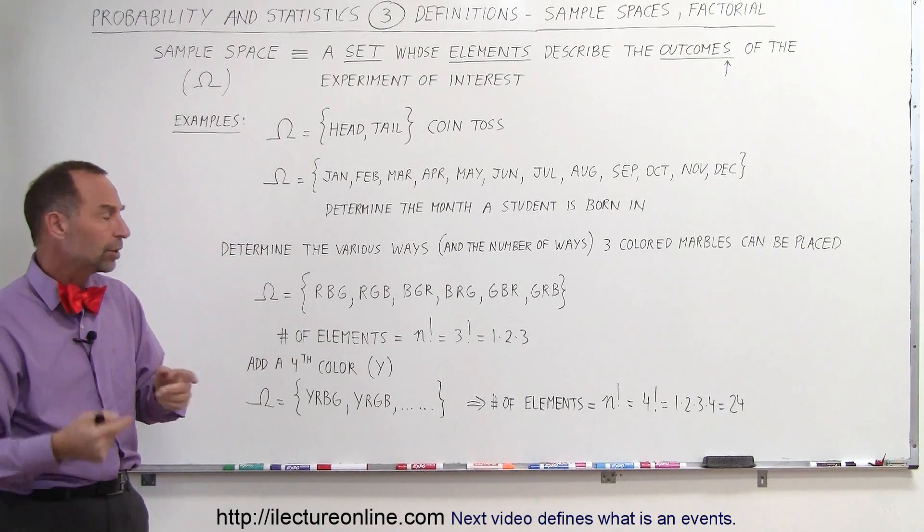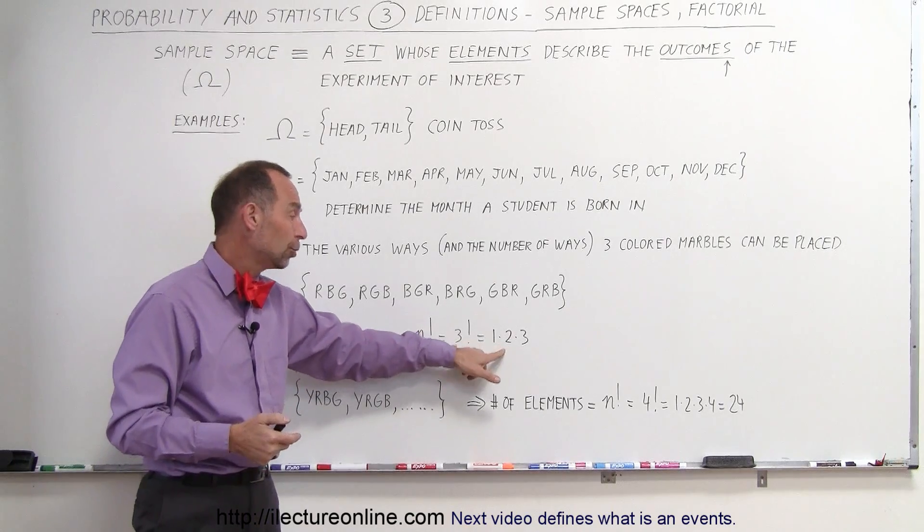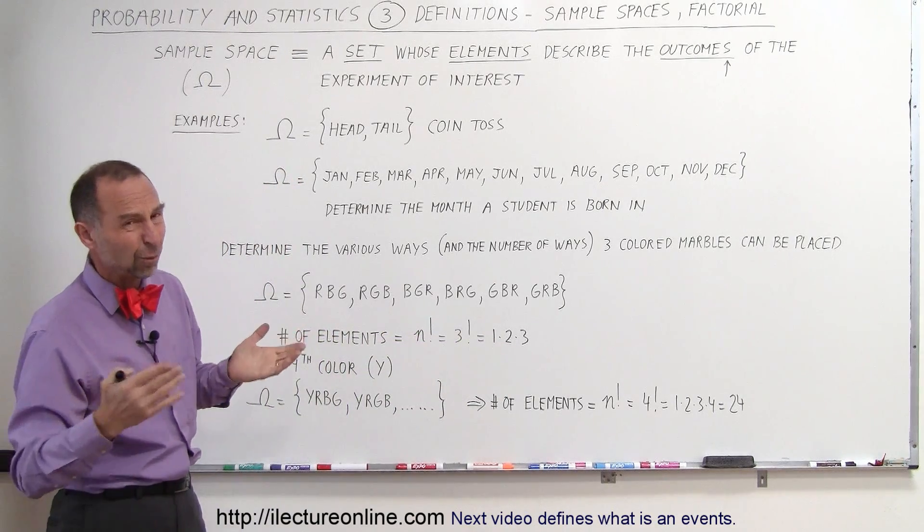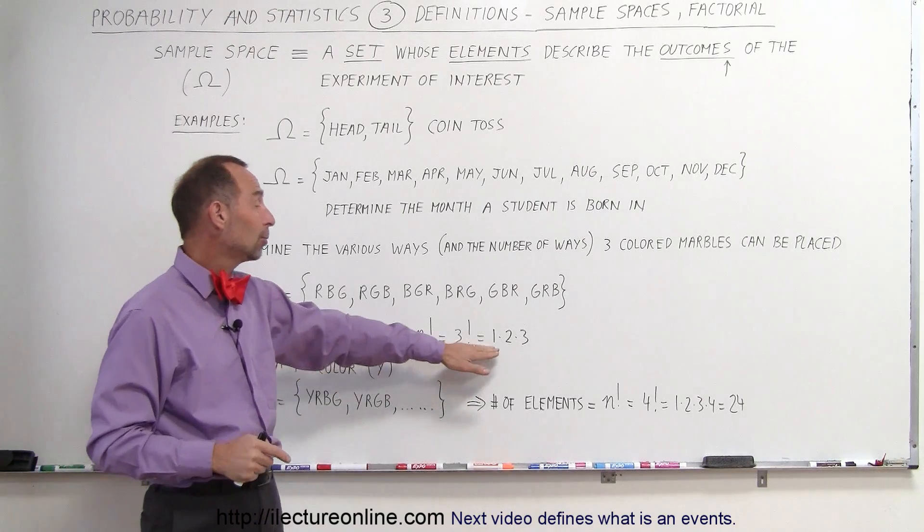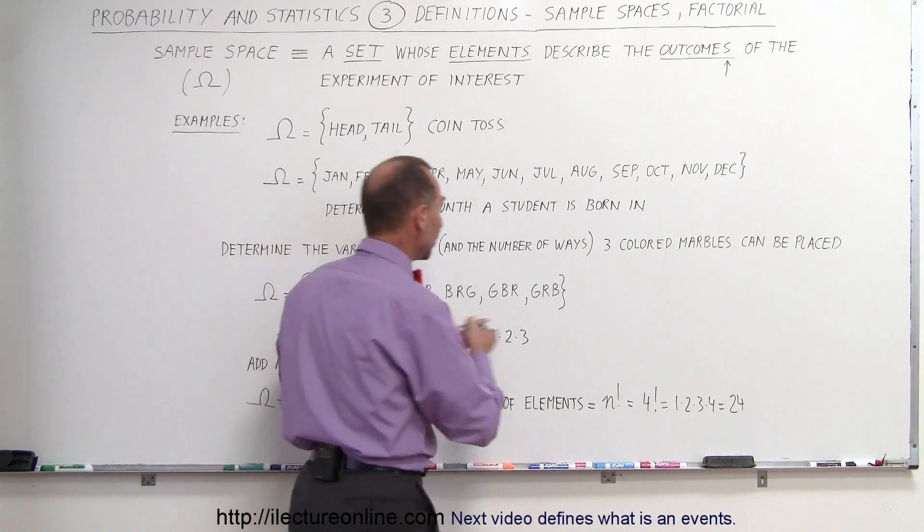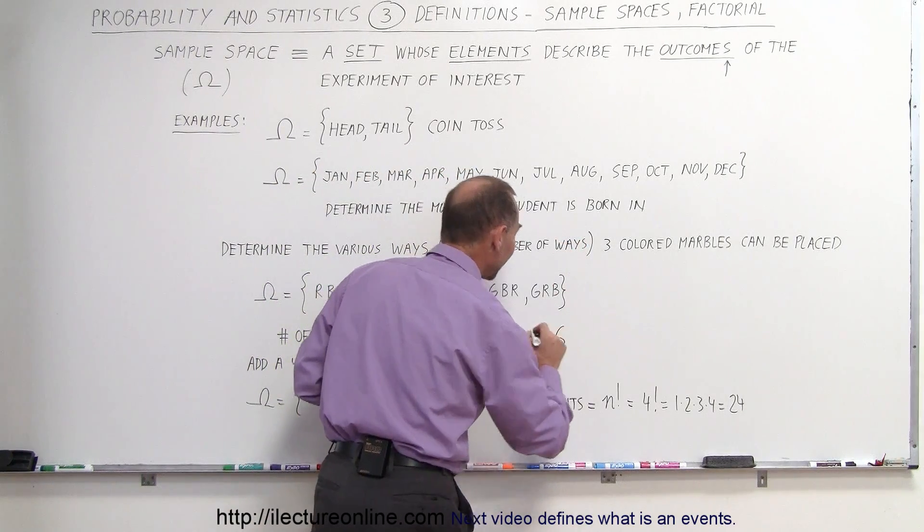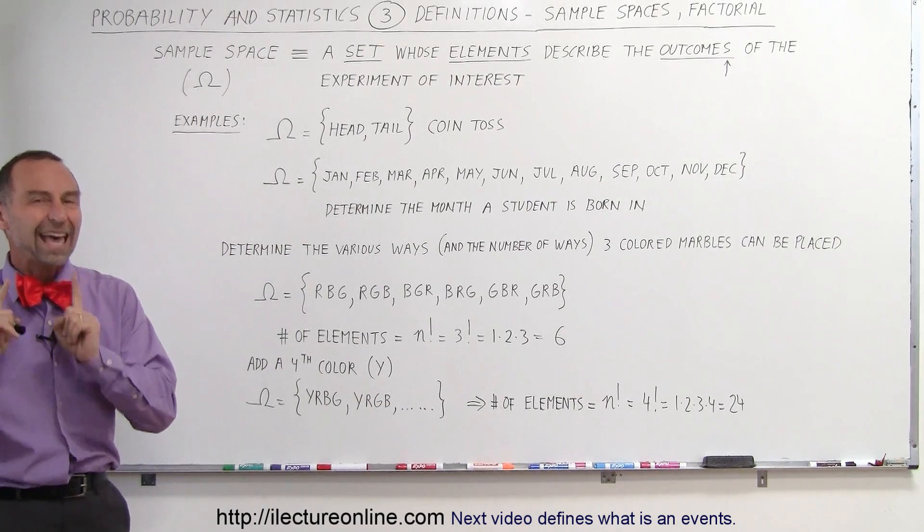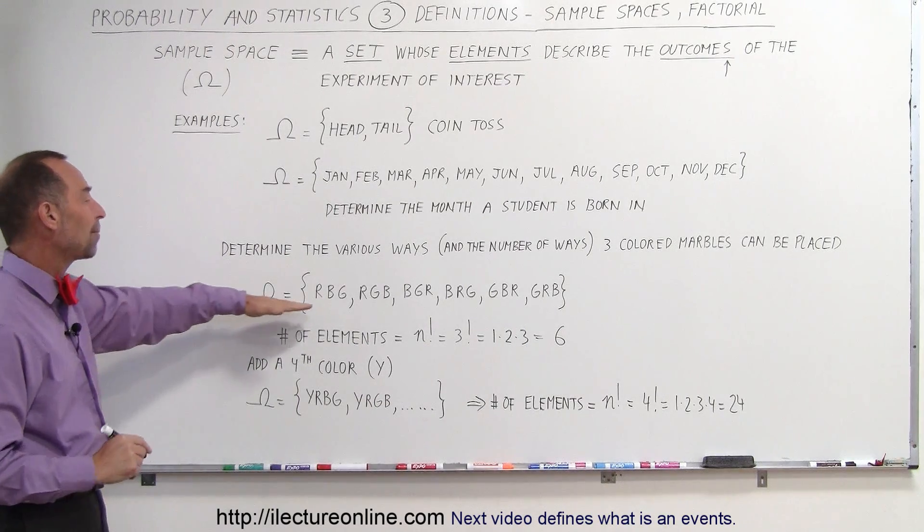Well, if there's three factorial, then we multiply the number one times the number two times the number three. Sometimes they start with number three and work their way down; doesn't really matter as long as you multiply them together. So three factorial is one times two times three. When you multiply all that together, you get six. So therefore there are six possible outcomes, therefore there are six elements in this particular sample space.